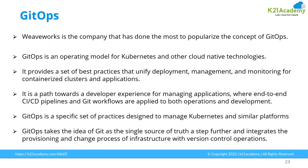GitOps takes the idea of Git as a single source of truth and integrates the provisioning and change process for infrastructure version control. Usually people think version control is only used to manage application code — that's right — but you can also create your infrastructure code in Git repositories. For example, how to create resources on a Kubernetes platform: you can create those YAML files, put them in the Git repository, and integrate them with the application. As soon as you deploy the application, it will pick up the infrastructure code from GitHub, integrating application deployment with infrastructure provisioning and operations. The purpose of GitOps is to remove the gap between deployment and operations by implementing automation in both deployment and infrastructure-related activities.